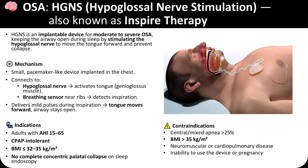Hypoglossal nerve stimulation, also known as Inspire therapy, is an implantable device used to treat moderate to severe OSA in adults who cannot tolerate CPAP. It functions by stimulating the hypoglossal nerve to activate the tongue muscles and move the tongue forward, preventing airway collapse during sleep. The system includes a small pacemaker-like device implanted in the chest that connects to a breathing sensor near the ribs, which detects inspiration and synchronizes mild electrical pulses with each breath. It is indicated for patients with an AHI between 15 and 65, a BMI below 32 to 35, and no complete concentric palatal collapse on endoscopy. Contraindications include central or mixed apnea, severe obesity, significant cardiopulmonary or neuromuscular disease, and inability to operate the device.